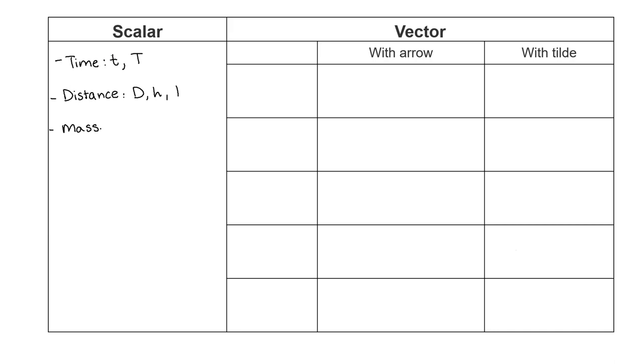Mass with an uppercase M, speed with an uppercase U, temperature with an uppercase T, volume with an uppercase V, and density with an uppercase D or the rho symbol which looks like a lowercase p.